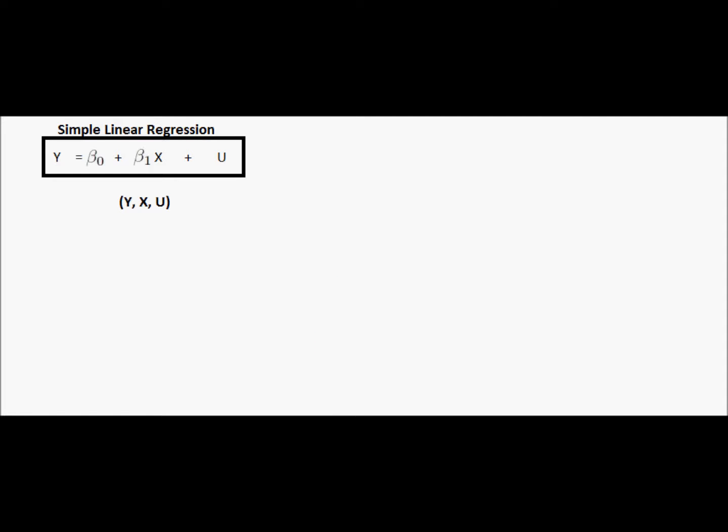Now y we call the response variable, or the dependent variable or the regressand. The x variable we call the explanatory variable, or the independent variable, regressor, or predictor.